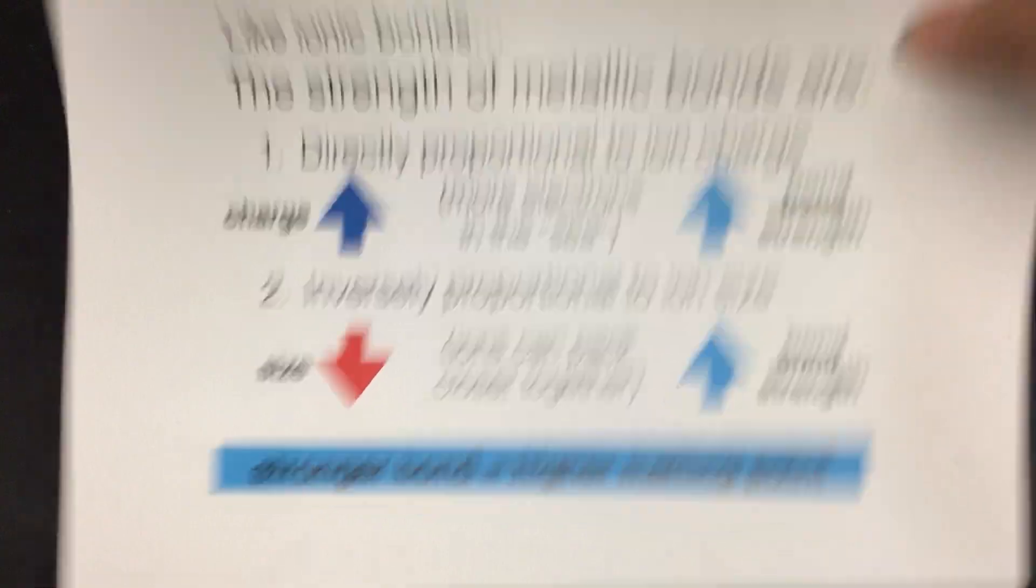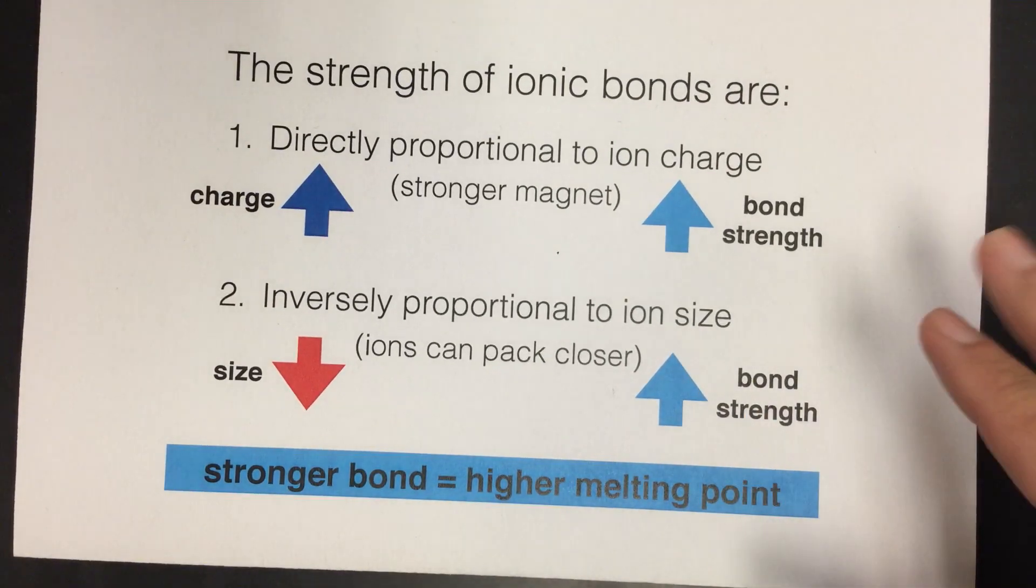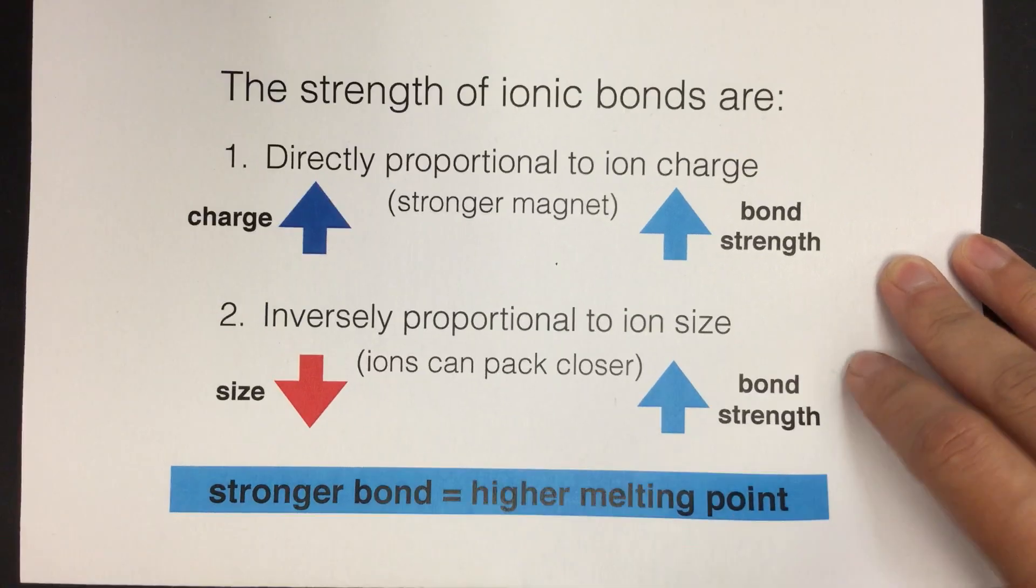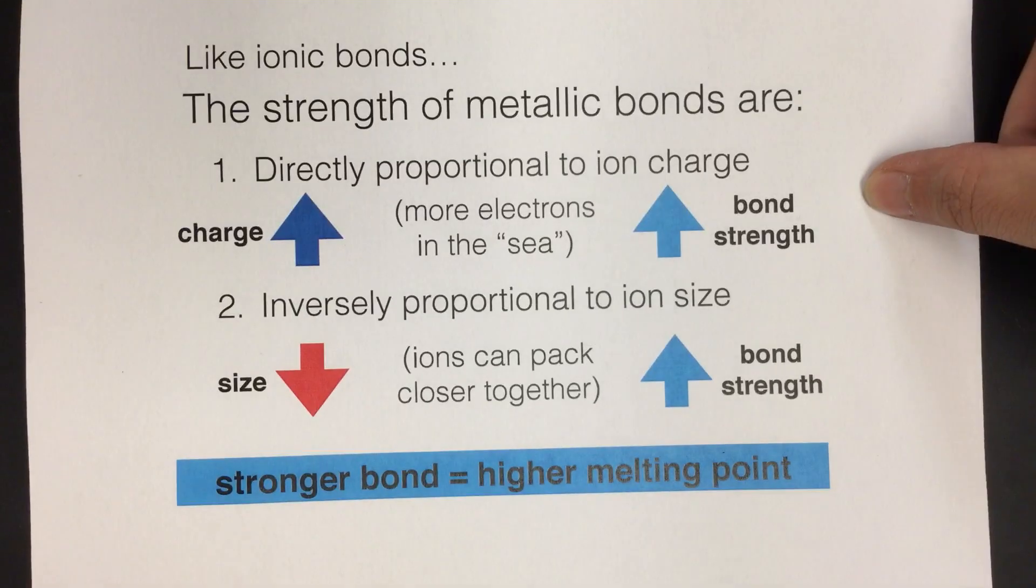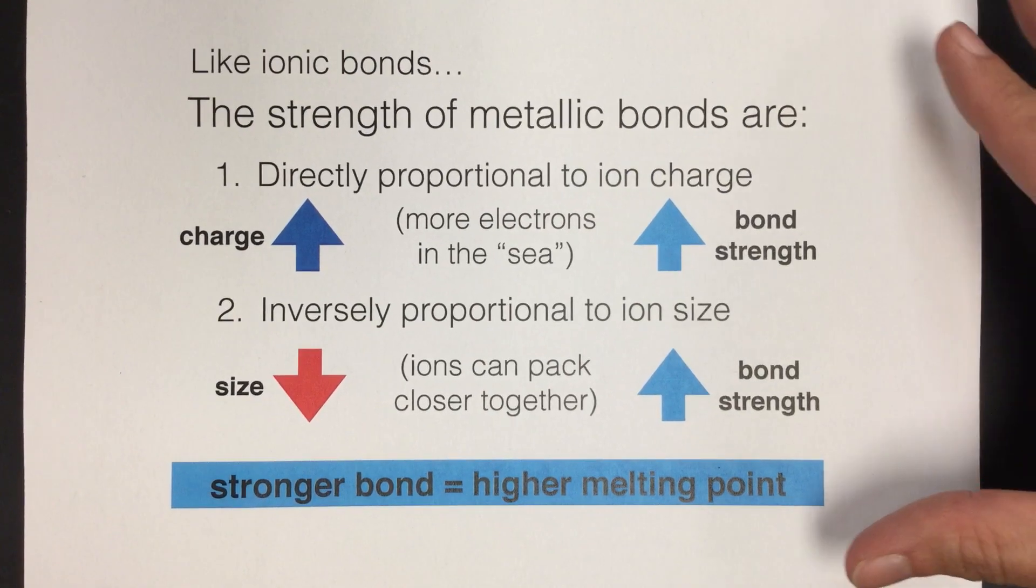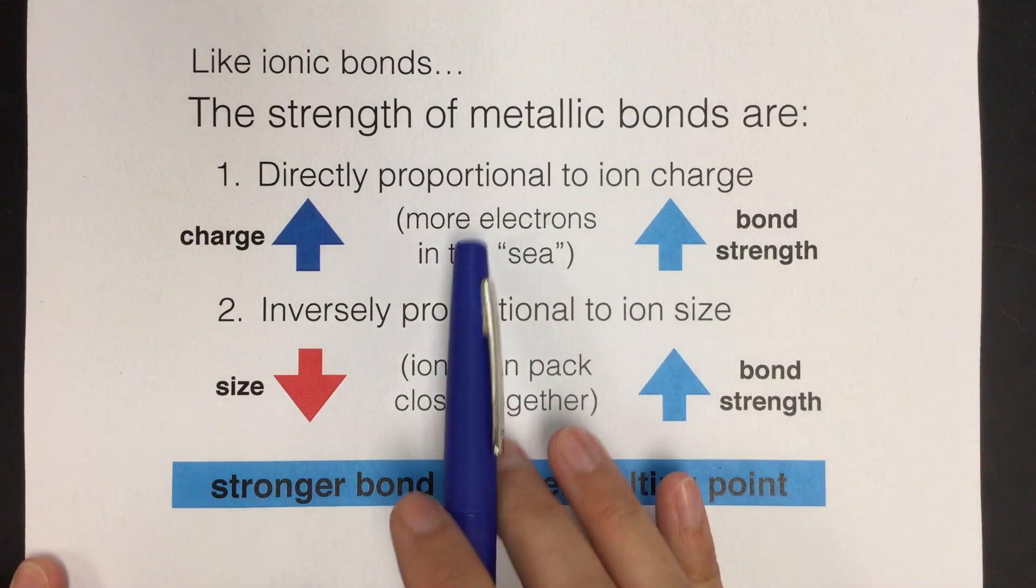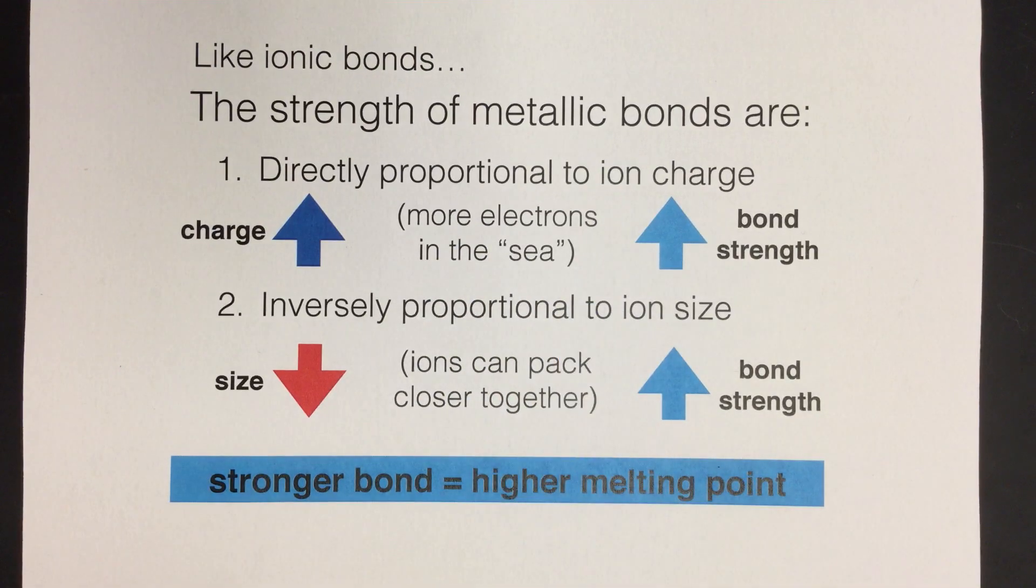This is really similar to looking at the strength of ionic bonds, so there's a video for that if you want to watch that. It's really similar, but we're going to look specifically at metals. The factors that affect the bond strength are exactly the same, so we'll just apply them in the same way, but the reason that they work the same is slightly different from metals, because metallic bonds are a little bit different than an ionic bond.